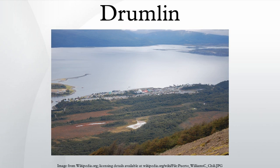Soil development on drumlins is variable, but on recently formed drumlins often consists of a thin A soil horizon and a thin BW horizon. The C horizon, which shows little evidence of being affected by soil-forming processes, is close to the surface, and may be at the surface on an eroded drumlin. Below the C horizon the drumlin consists of multiple beds of till deposited by lodgment and bed deformation. On drumlins with longer exposure, soil development is more advanced, for example with the formation of clay-enriched BT horizons.